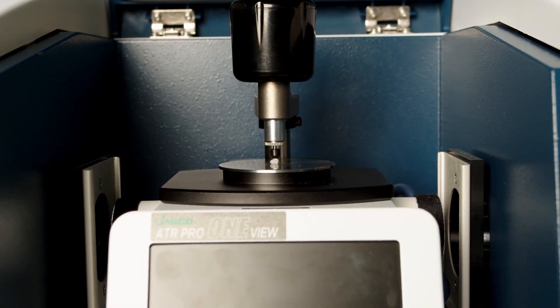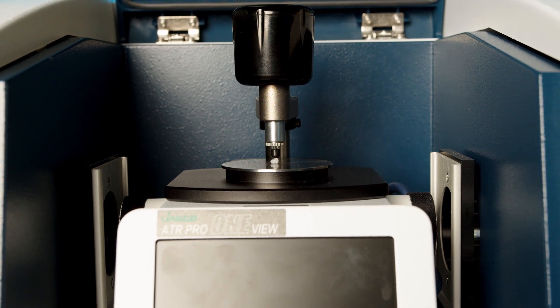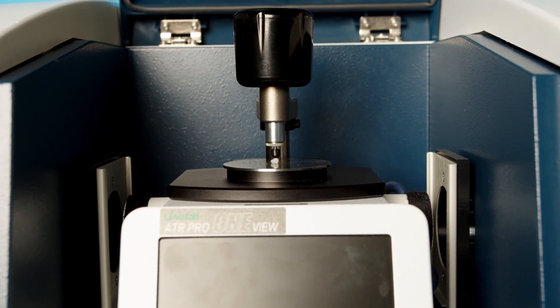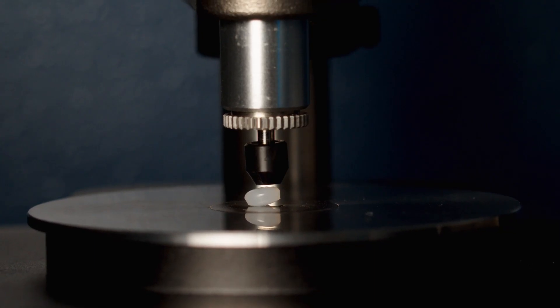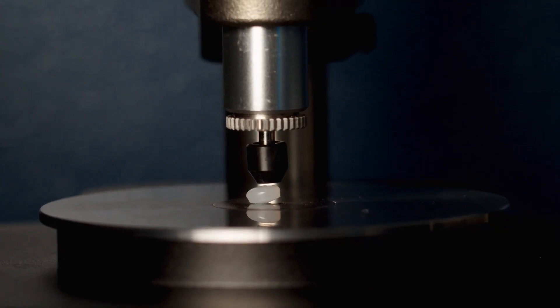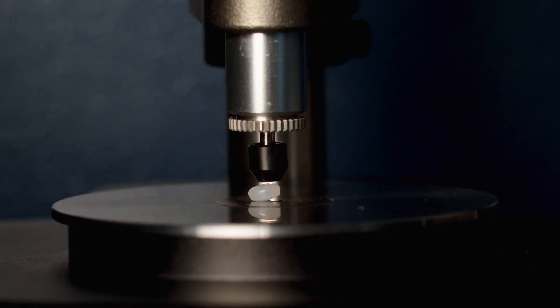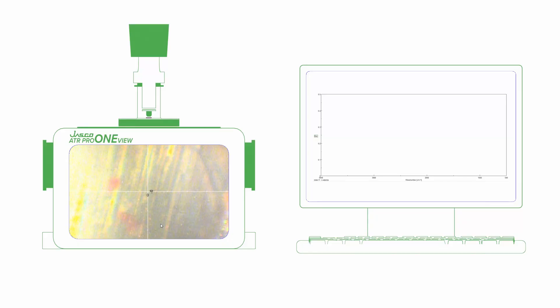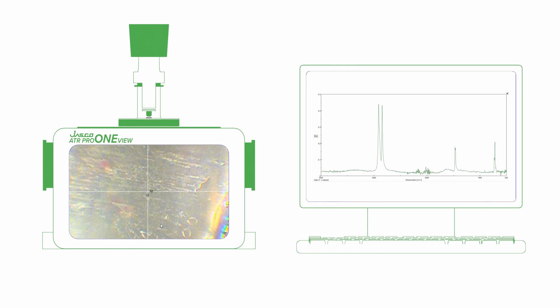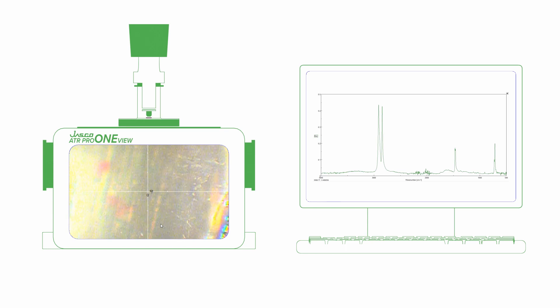The ATR Pro 1 View is our ATR accessory that has an LCD screen in front and also has a digital camera, so it is possible to take images of these samples and also collect chemical information. In this photometric method, the sample is in full contact with the ATR crystal — in this case we are using an ATR diamond crystal.